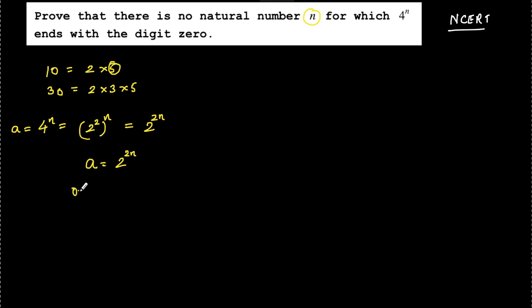So there is only one prime factor. Only one prime factor 2 is there for 2 to the power 2n.